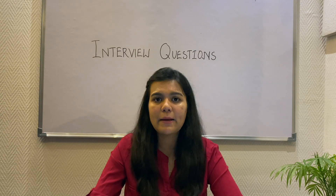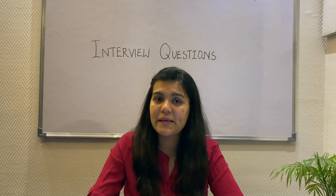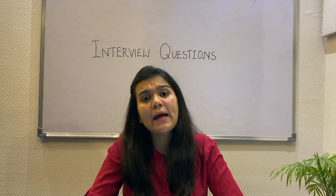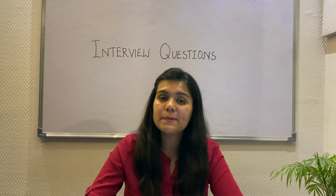Now let's see how the diamond ring problem is caused. We have a base class A with a method do, and two classes B and C both extend class A providing their own implementation of method do. Now if class D extends both class B and class C, and we create an object of class D — which method do will be called? From class B or from class C? This is the diamond ring problem, so Java avoids multiple inheritance.